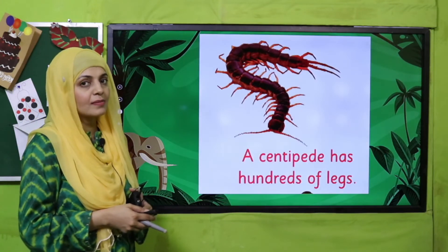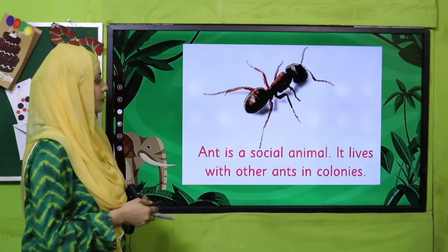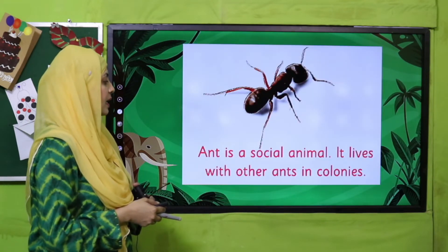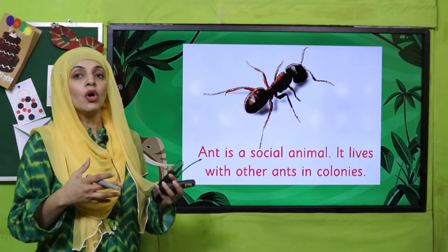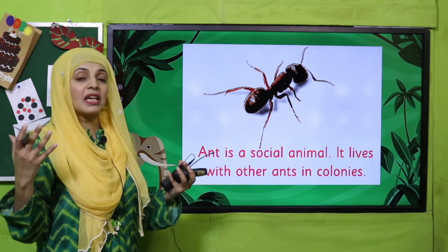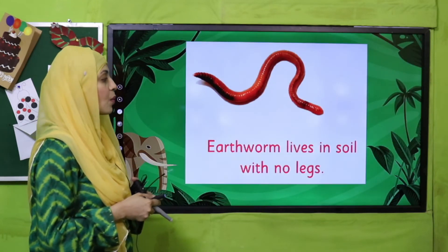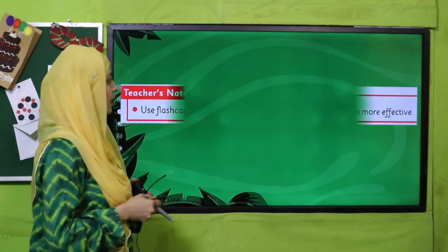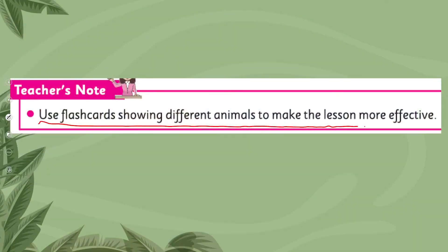This is a centipede and it has hundreds of legs — it is an insect. This is an ant and it lives with other ants in colonies. Some animals live together with other animals. This is a worm — it does not have legs.